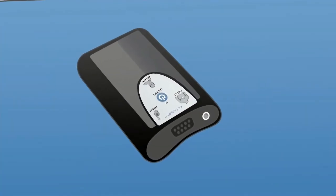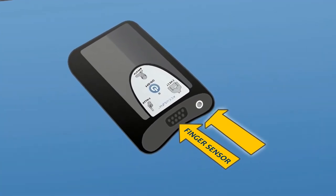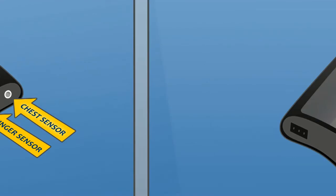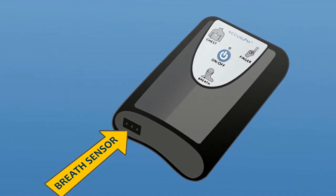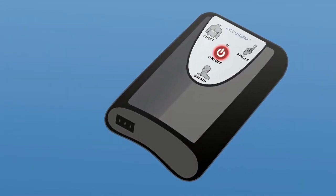The top panel has openings to attach the finger sensor and the chest sensor. The bottom panel has an opening to attach the breath sensor and the on-off button is on the front panel.